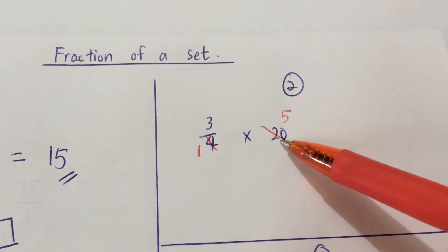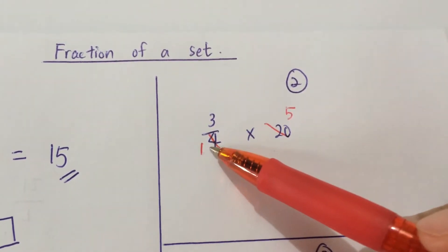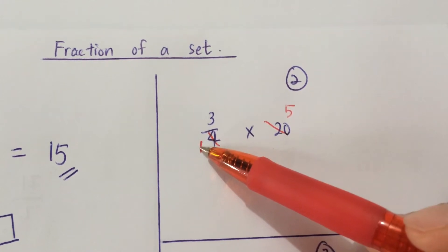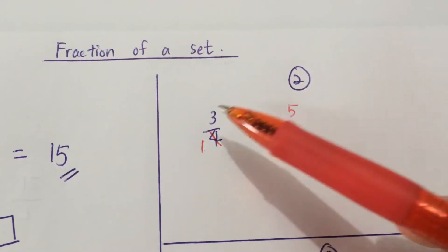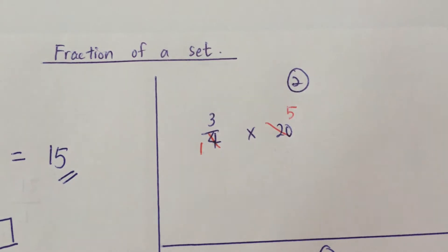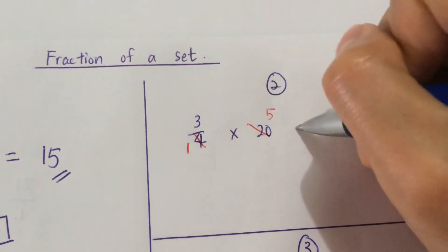You want to make the denominator here 1. Now that we are done, 3 times 5 is 15. And that's your answer.